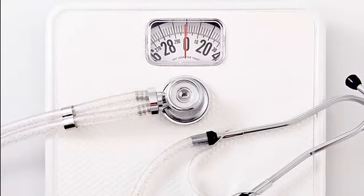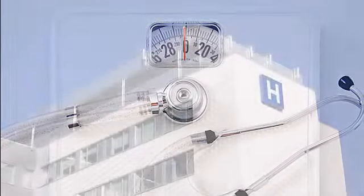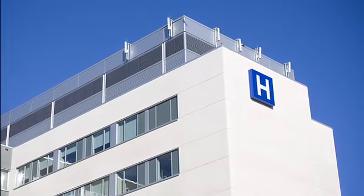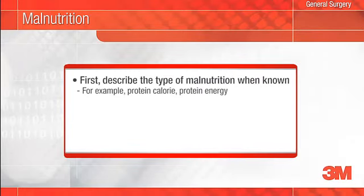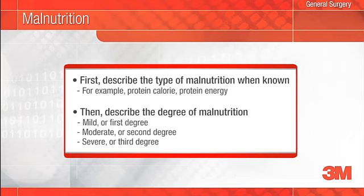Malnutrition is an under-documented condition in the elderly. However, it is also an important indicator of your patient's severity of illness and an important influence on performance metrics such as readmission rates, length of stay, and quality outcomes. If your patient has malnutrition, you should document the clinical picture, the type — such as protein-calorie or protein-energy malnutrition — and the stage or degree, for example mild, moderate, or severe, or first, second, and third degree. Your notes should include clinical findings such as patient with terminal cancer, 20-pound weight loss, and cachexia, and any supporting labs such as low albumin.